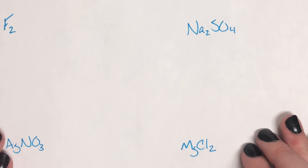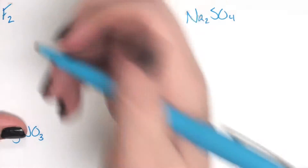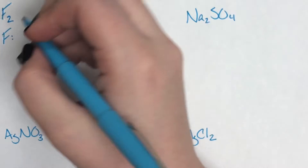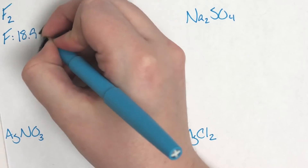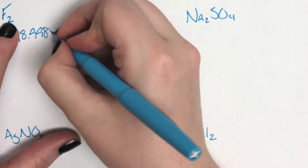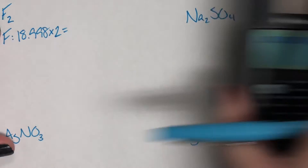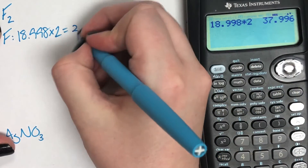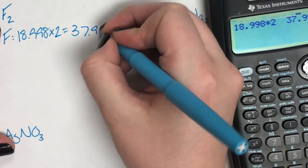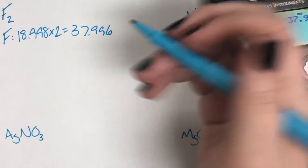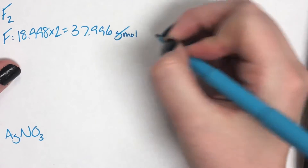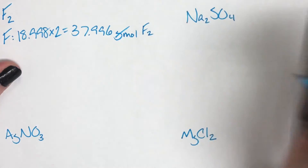Let's try a couple more. We have F2. Luckily there's only one element here, so listing it out doesn't take long. Fluorine's mass is 18.998. I have two of them, so 18.998 times 2 gives me 37.996. I don't have anything to add up, so this number is my final answer — 37.996 grams per mole F2.